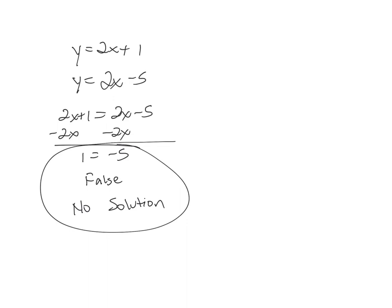On your assignment: the first set is matching — match the system with its graph and state whether there's one solution, no solution, or infinitely many. Then you'll solve four problems where you could get a coordinate answer like (2, -5), or no solution, or infinitely many solutions — at least one of each type is included. The last few problems ask you to use slope and y-intercepts of the graphs to determine the number of solutions.